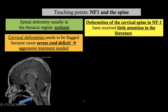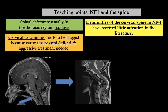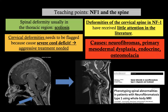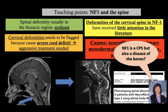Look at this case — it presented with expected NF1 brain changes, but the radiologist described a dysplastic appearance of the odontoid process. However, nothing was done, and this presented very badly over time. Remember: the causes of scoliosis in NF1 are not only neurofibromas but also primary dysplasia, endocrine abnormality, and osteomalacia. I put a couple of papers here — please download and read them. NF1 is a cancer predisposition syndrome but also a disease of the bones.